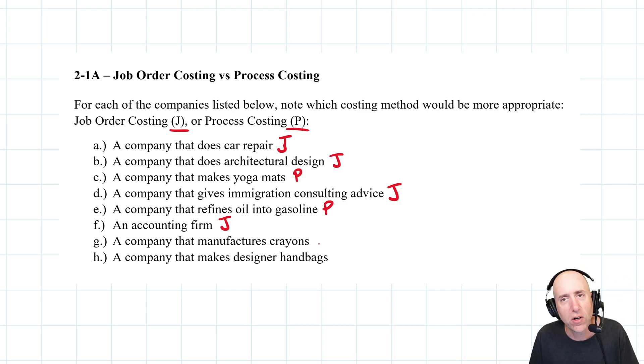A company that manufactures crayons: again, the pack of crayons is the end product. It costs the same no matter the customer. You're not making custom crayon packs, presumably, for your customer. So this would be process costing.